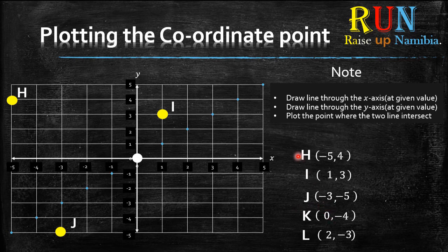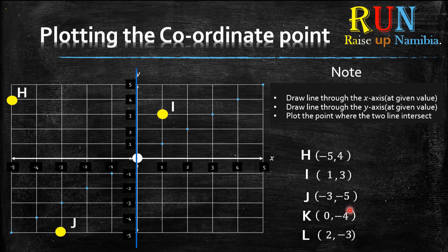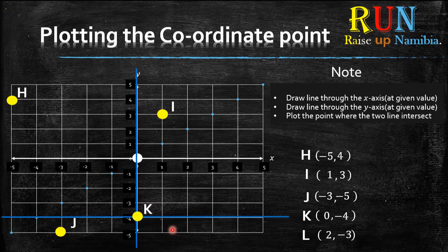For K, the x value is zero. On the x-axis, find zero and draw a line. Then find the y value of K, which is negative 4. Go to the y-axis, find negative 4, and draw your line. Where these two blue lines intersect or cross — that's where your K will be.